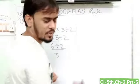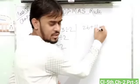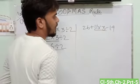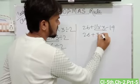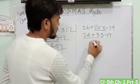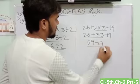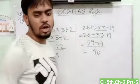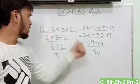Same here in another example. 26 plus 11 into 3 minus 9. So there is a multiple. So first we do multiple. 11 into 3 is equal to 33. After that addition, 26 plus 33 is 59. Minus 9. 59 minus 9 is equal to 50. So this is the order of operation of your number.